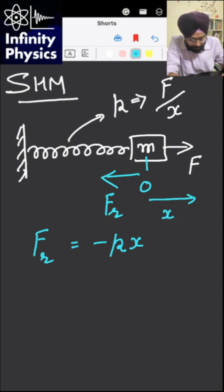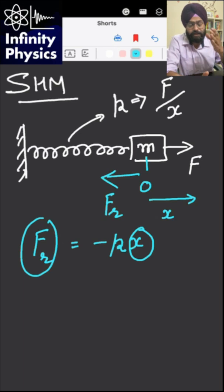Now if you displace this mass by small amount x, then the force will be directly proportional to this x. Means if x increases, means if the distance of the particle of mass m from the mean position increases, then the restoring force also increases but it acts in the opposite direction.